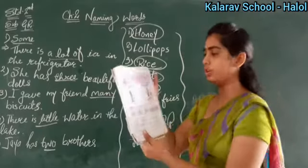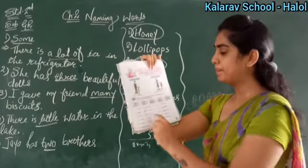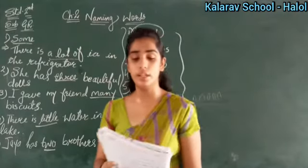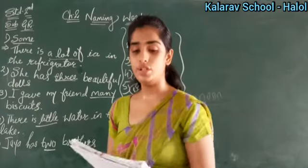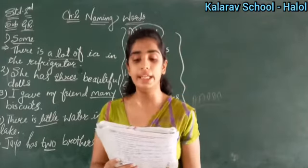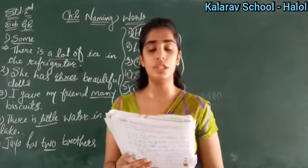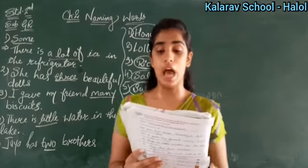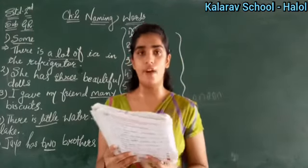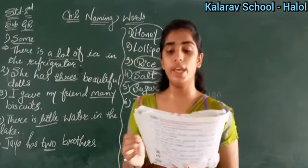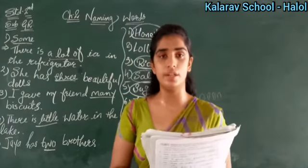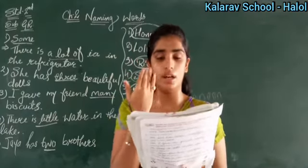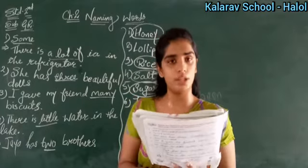Now turn the page. Look at what is written here. A noun is in the masculine gender if it denotes a man — like son, uncle, father. A noun is in the feminine gender if it denotes a female — like girl, daughter, or mother.